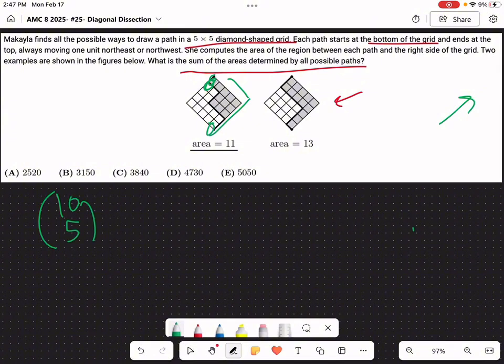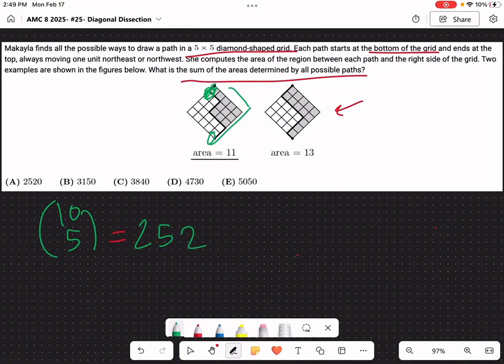And you have to choose 5 of those steps to be northeast, right, because if you don't take at least 5 northeast steps, you will not end up here. And you need to take 5 northwest steps because if you don't take 5 northwest steps you won't end up here. So that's why we're doing 10 choose 5. You choose 5 northeast steps or northwest steps. So what would this be coming out to? So 252 possible paths.